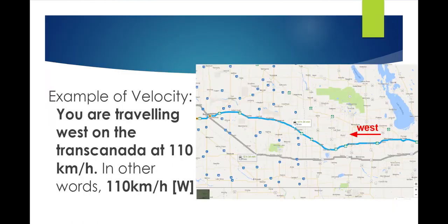An example of velocity: you're traveling west on the Trans-Canada at 110 kilometers per hour. It would be written as 110 km/h (W) — W for west, N for north, E for east, S for south. The direction is what makes it velocity rather than just speed.